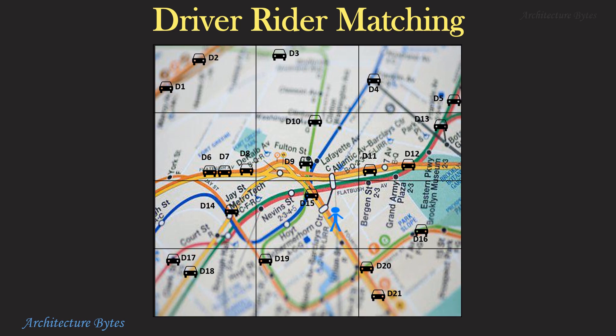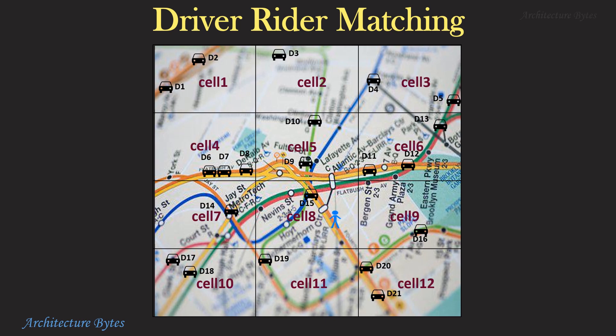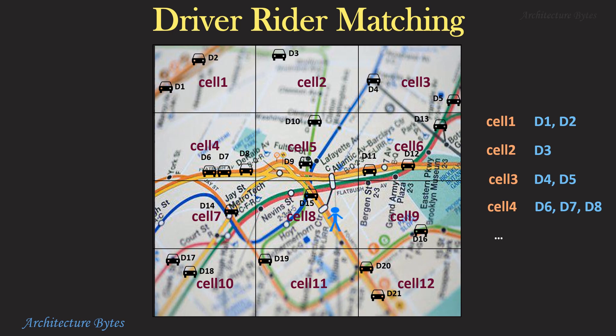Therefore, let us divide this geographical area into rectangles or hexagons — let's call them cells. This would allow the system to know drivers in each cell and also the potential rider's cell. For example, cell 1 has drivers D1 and D2, cell 2 has driver D3, and so on. The potential rider is in cell 8.